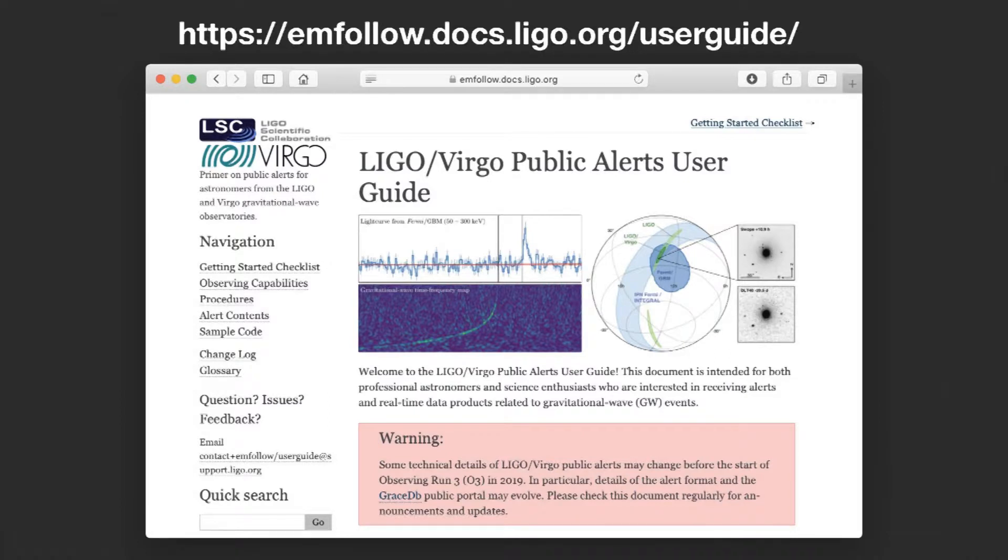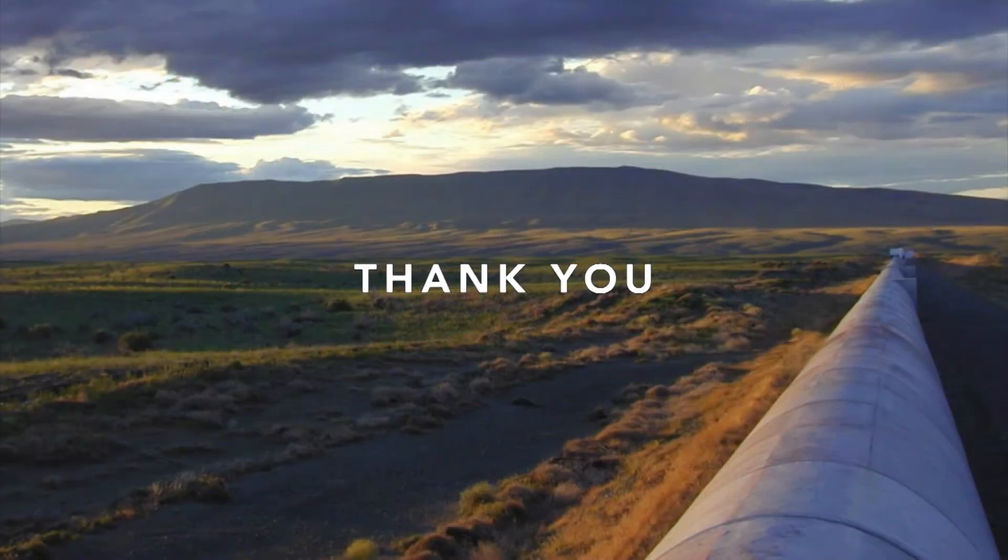Lastly, I put together a user guide for LIGO Virgo public alerts. This is a document that the LIGO scientific collaboration has put out that goes through the process of signing up for LIGO Virgo alerts, pulling the sky maps out of them and how to use the sky maps. A lot of the material in the tutorial that we're about to go to is taken from this document. With that, I'll stop and ask for questions before we switch to Python.